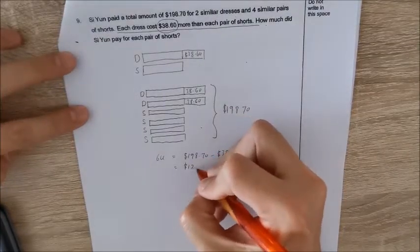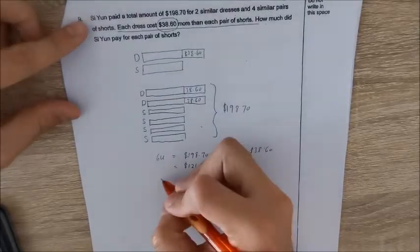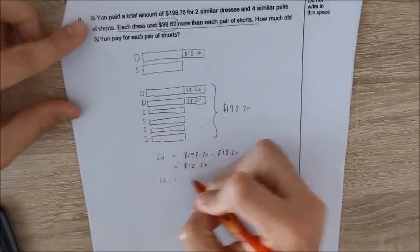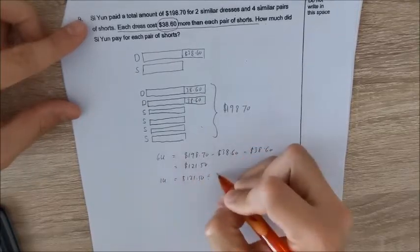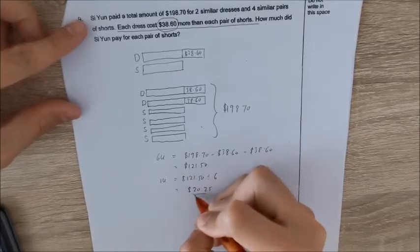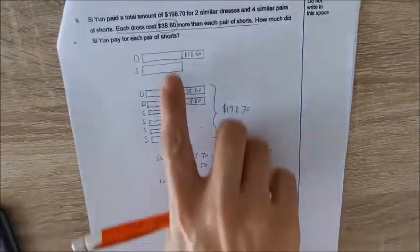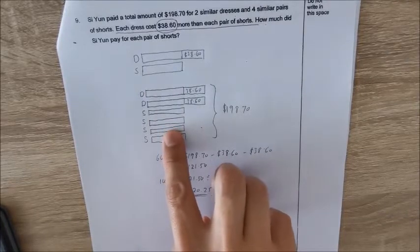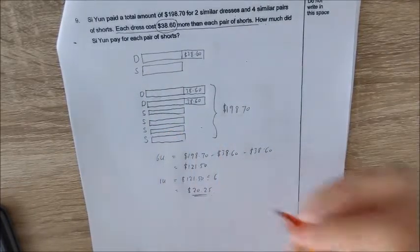So that will give us $121.50. And if I were to find one unit, it will be $121.50 divided by six. So each unit is $20.25. And just nice, one unit is actually the cost of one pair of shorts. So this is the answer.